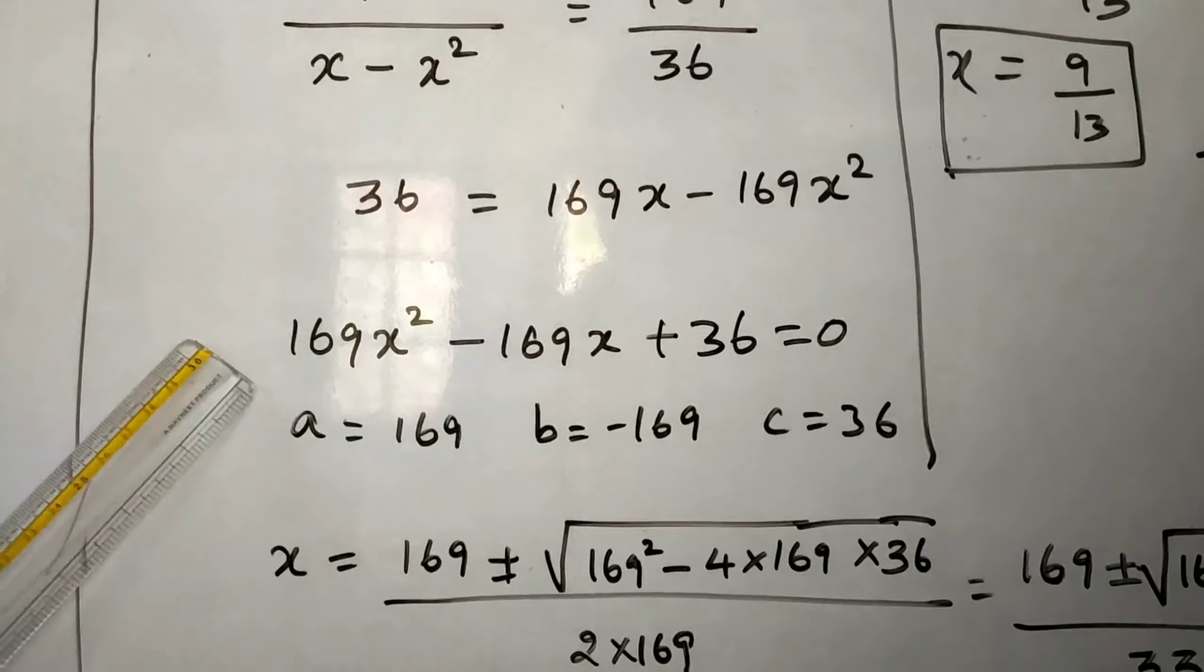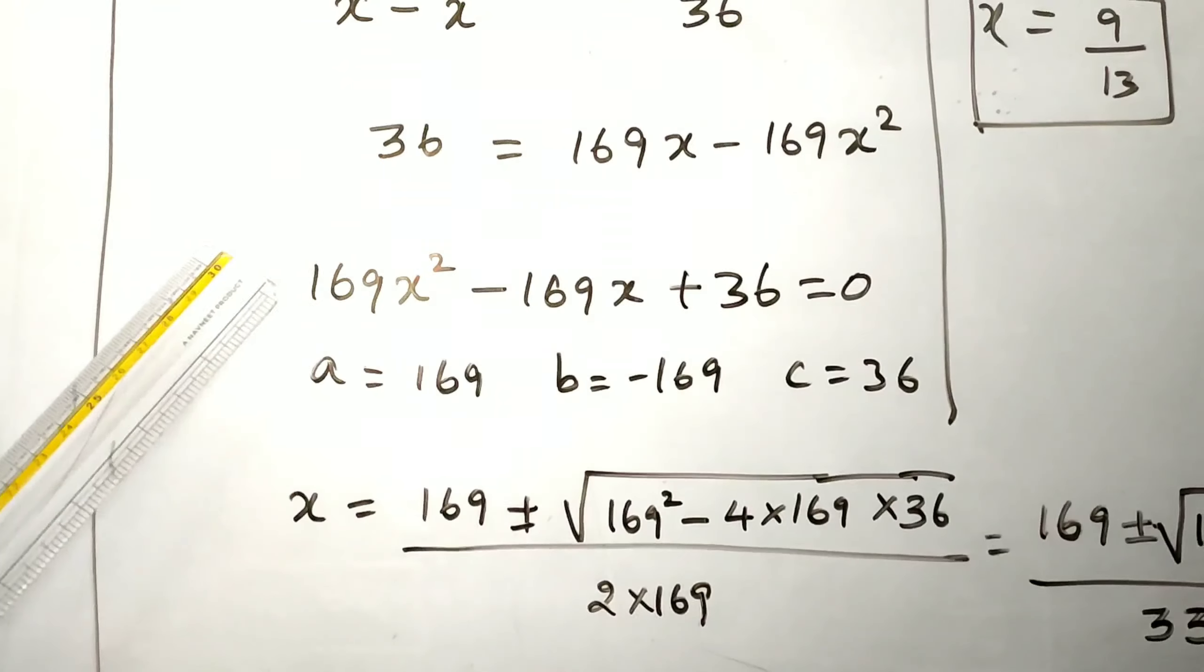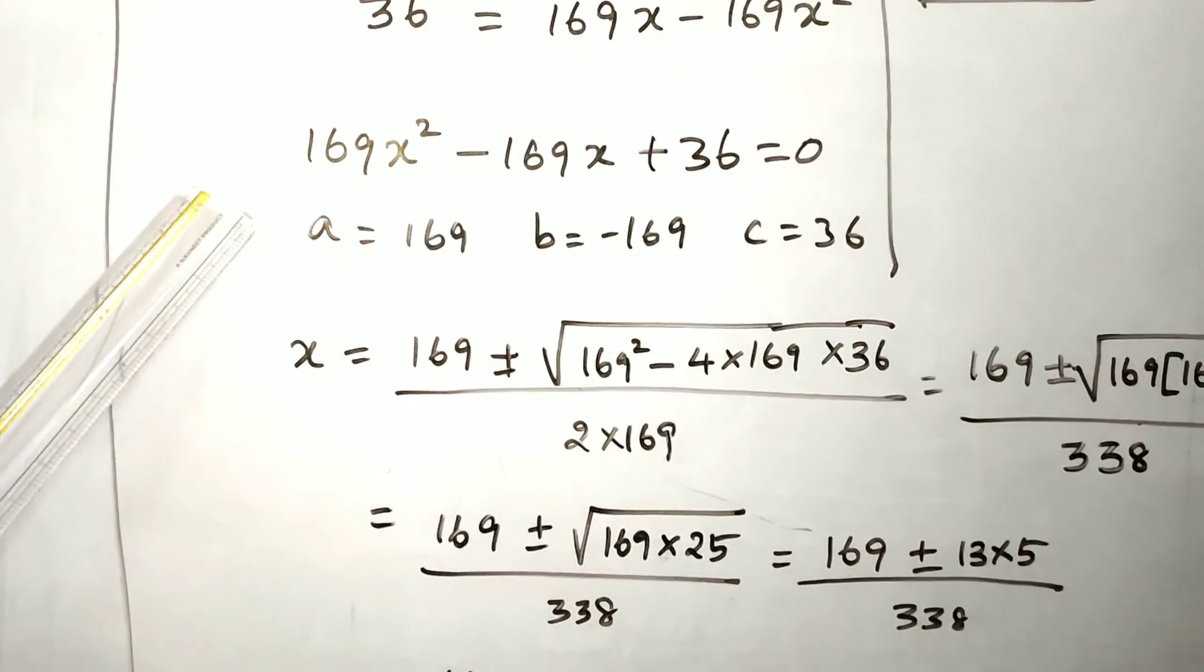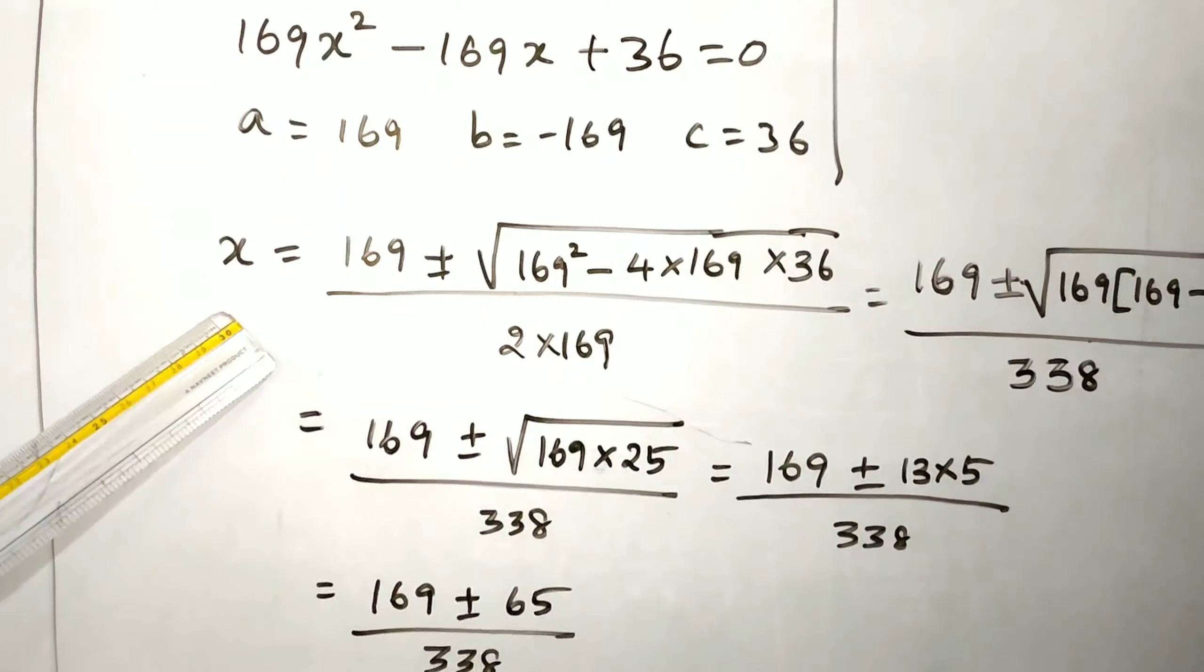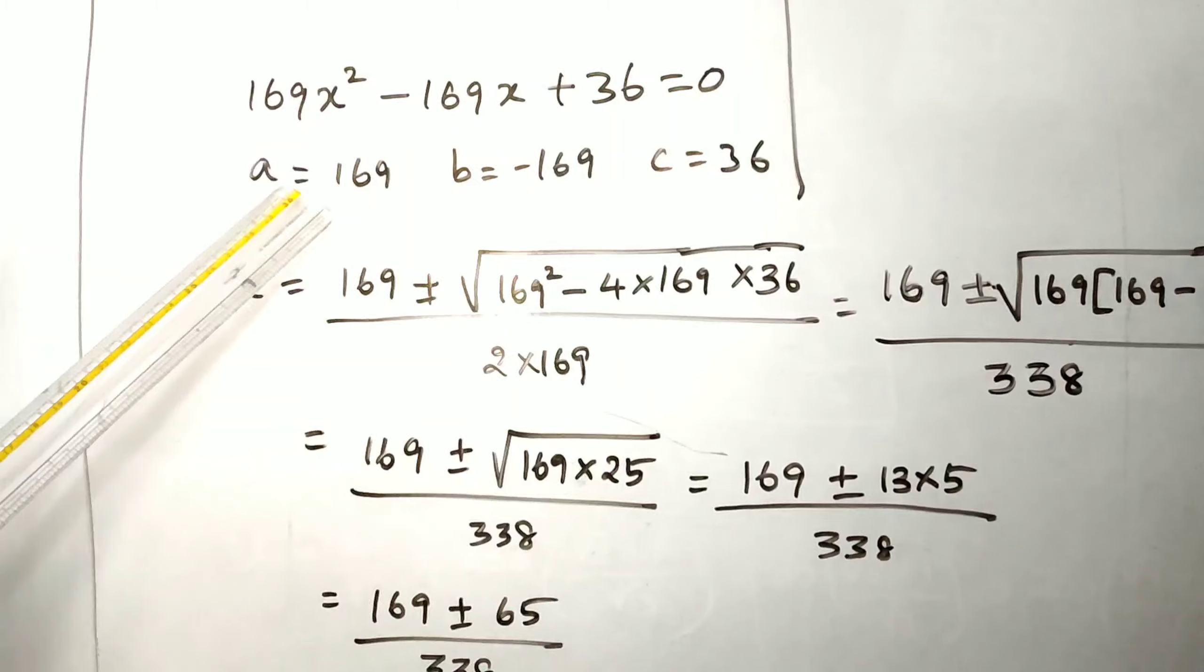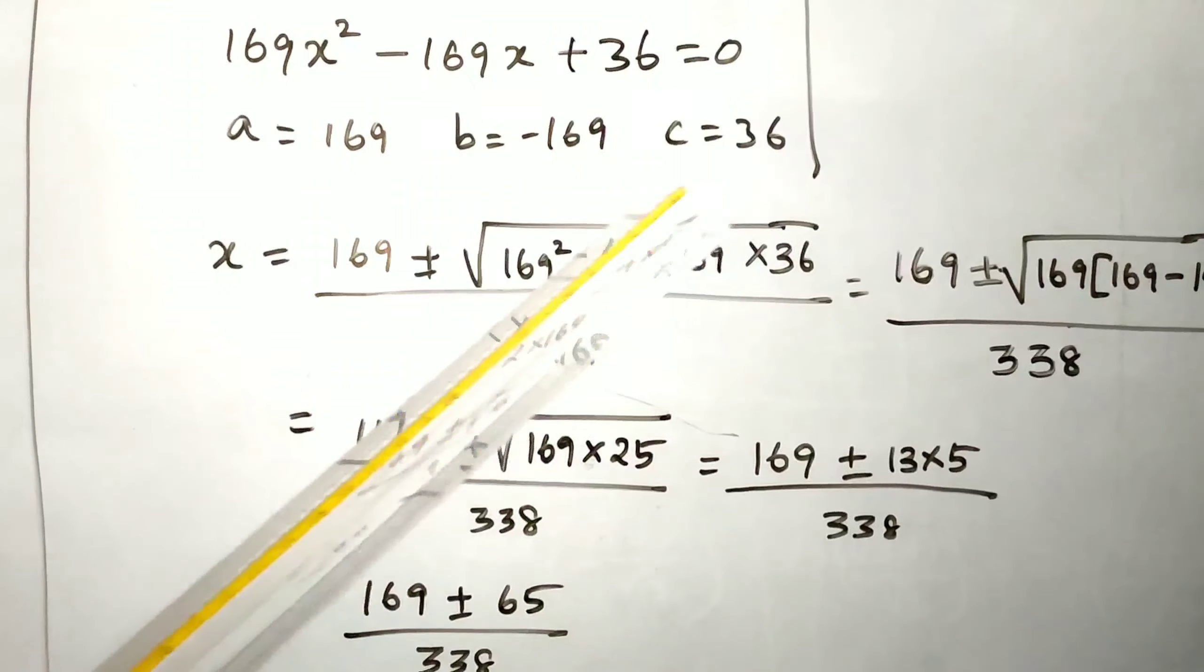Now we reach the quadratic equation in general form. You can use either factorization method or formula method. Here I'll use the formula method. We can also see factorization method later. a equals 169, b equals minus 169, c equals 36.